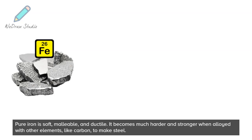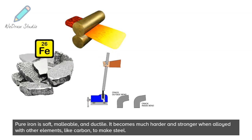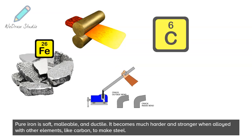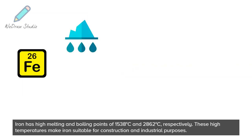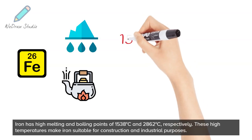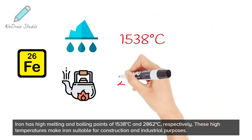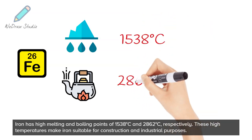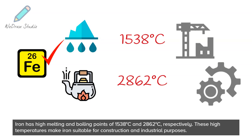Pure iron is soft, malleable, and ductile. It becomes much harder and stronger when alloyed with other elements, like carbon, to make steel. Iron has high melting and boiling points of 1,538 degrees Celsius and 2,862 degrees Celsius, respectively. These high temperatures make iron suitable for construction and industrial purposes.